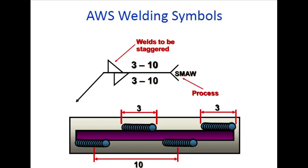For staggered welds, how to define the symbol - you see 3-dash-10: 3 means the weld size (weld line) and 10 means the center-to-center weld distance, which is the pitch.